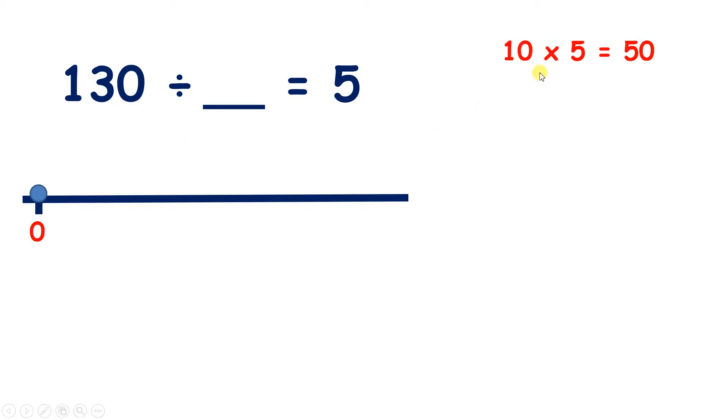So if we count in steps of 10 times 5, so in steps of 50, we have 50, 100, and another 50 would take us to 150, but that would be too many.